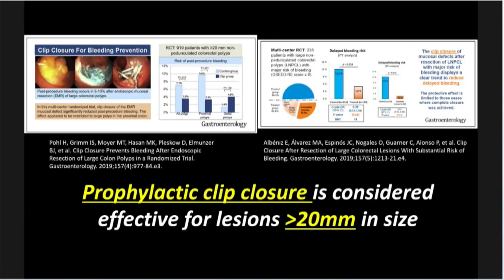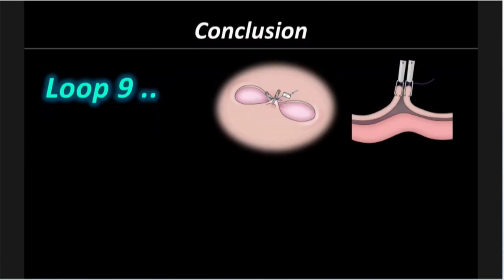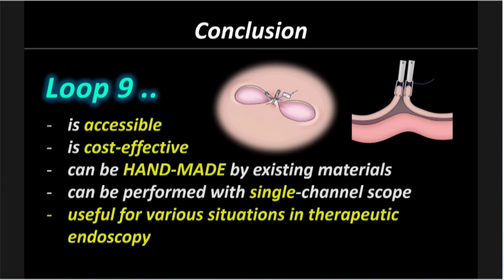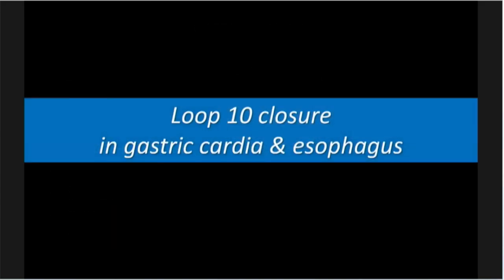Like this, prophylactic clip closure — we have had discussion. Some papers report that for defects more than two centimeters, it's better to be closed, but it depends. Particularly in the left colon, we can close tissue using this technique for safety. Loop nine has very good cost-effectiveness and is handmade. One interesting point: it is not necessary to change scope. We can apply loop nine even for upper GI.